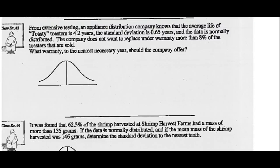We also did this one in Lesson 6. From extensive testing, an appliance distribution company knows that the average life of Toasty Toasters is 4.2 years. Standard deviation is 0.65, and it's normally distributed. So as soon as I see it's normally distributed, I can write down my mean and my standard deviation. The company is now going to replace under warranty more than 8% of the toasters that are sold. So this area here is 0.08, or 8%.